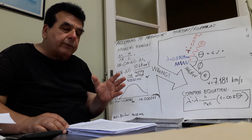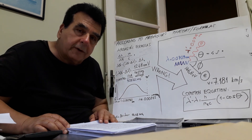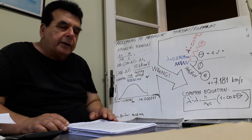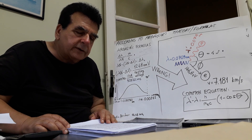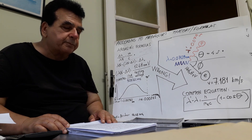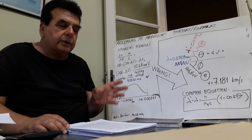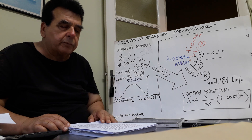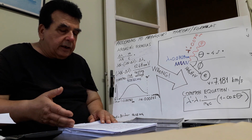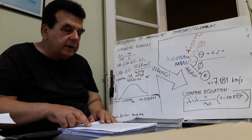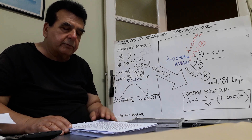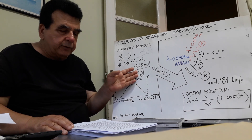Is it really possible for 146.8 electron volts of energy to give a 9.11×10⁻³¹ kilogram electron a speed of 7.189 kilometers per second? I have computed: if the electron speed were 7.189 kilometers per second, the required delta lambda value confirms this.